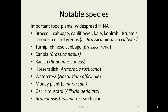There are lots of notable species in this family — they're important food plants, in particular, and widespread in North America. Broccoli, cabbage, cauliflower, kohlrabi, Brussels sprouts, kale, and collard greens — believe it or not, they're all the same species: Brassica oleracea, selected for different features. Also, turnip and Chinese cabbage is Brassica rapa; canola is Brassica napus; radish is Raphanus sativus; horseradish is in this family; watercress, Nasturtium officinale; money plant is a horticultural species, Lunaria; garlic mustard is in this group; and Arabidopsis thaliana is a famous research plant I will discuss more later.